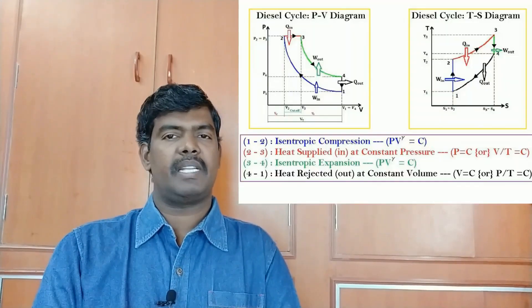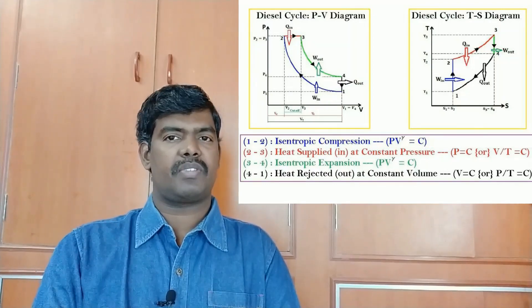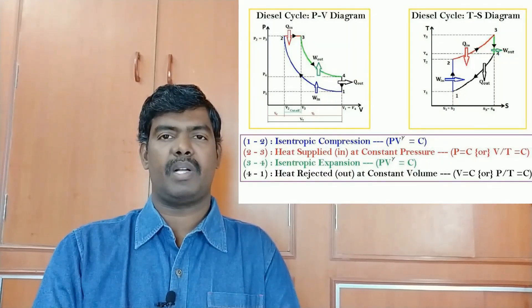During suction there is a key difference from the Otto cycle. In the Otto cycle, an air-fuel mixture enters the engine cylinder during suction, but in the Diesel cycle, air alone enters the engine cylinder. During suction, atmospheric air at a given pressure enters — in numerical problems some initial pressure value is given. This is indicated as a horizontal line in the PV diagram.